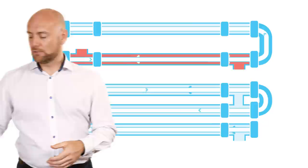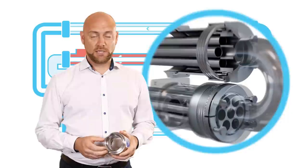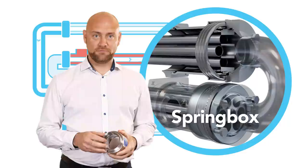Second, instead of standard inner dividers that divide the inner tubes, a spring box can be used. This enables the product to flow freely, a big advantage for products containing fibers.